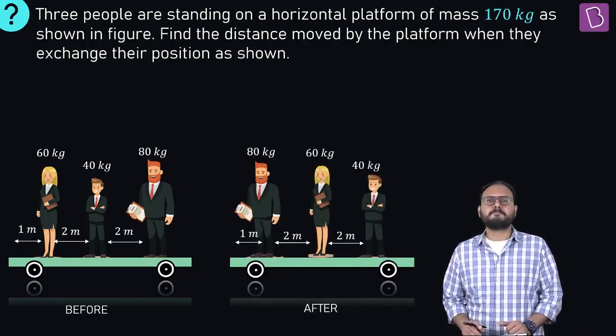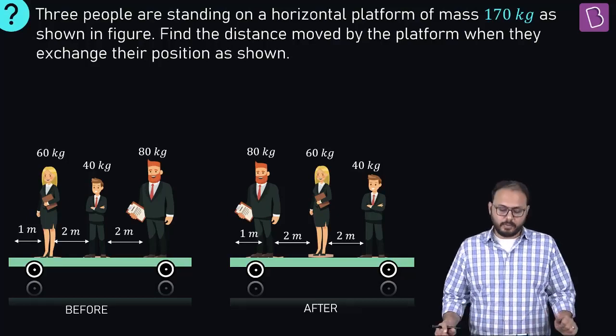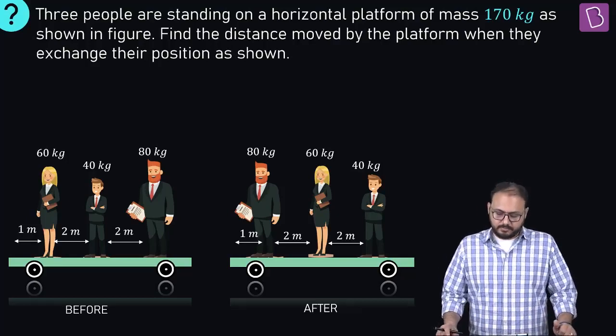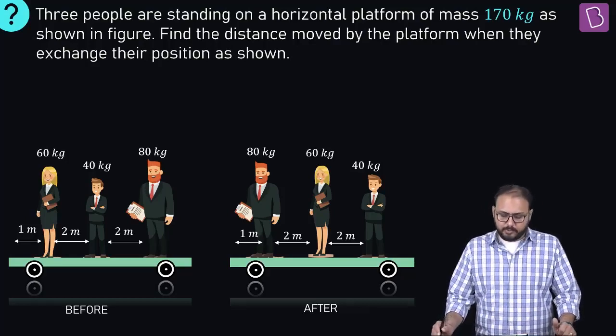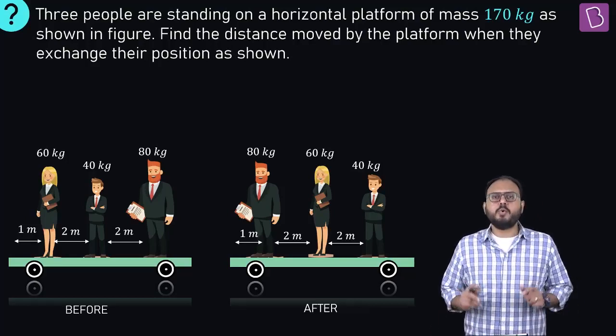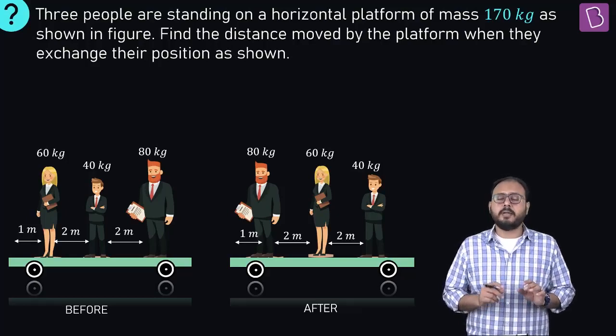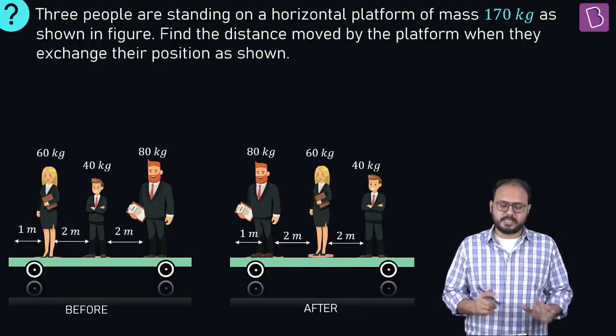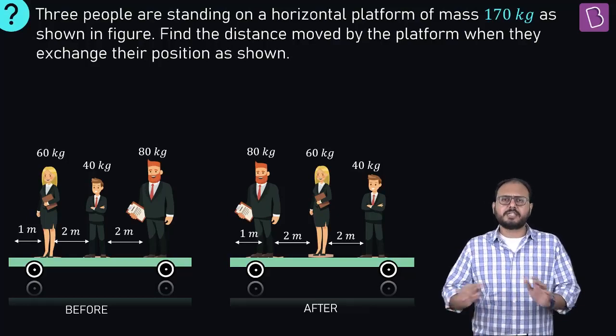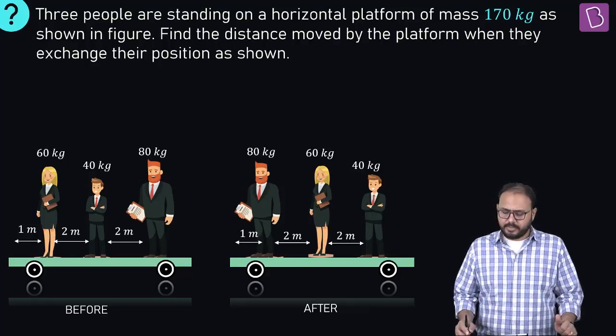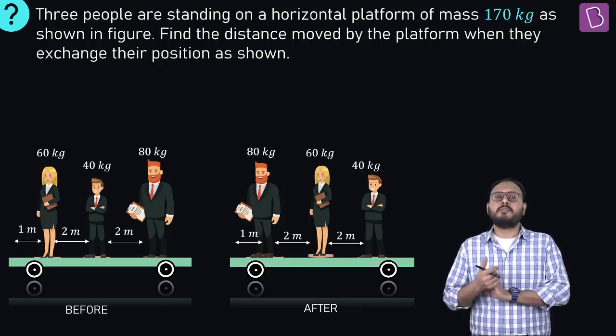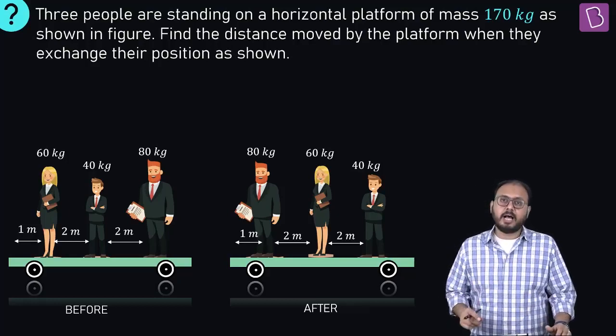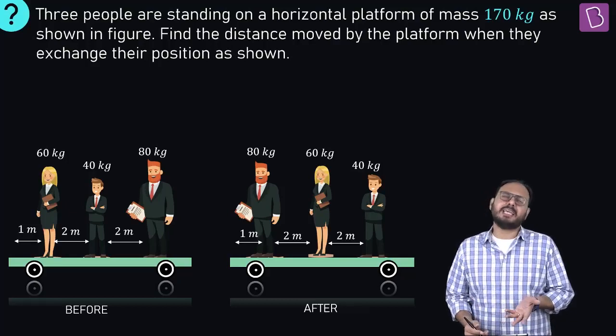Watch carefully. There are three spots - spot one, spot two, spot three. The people who were standing on their spots in the initial scenario exchange their positions in such a way that you have to figure out how much did the platform move.